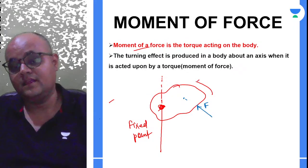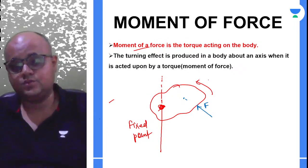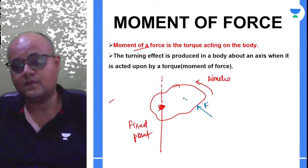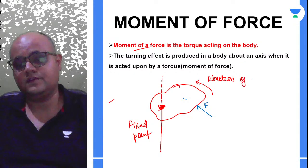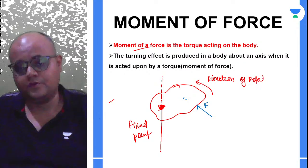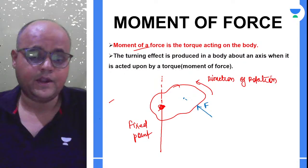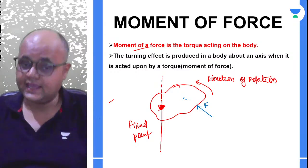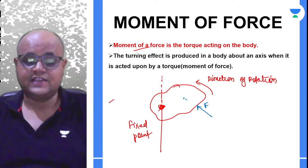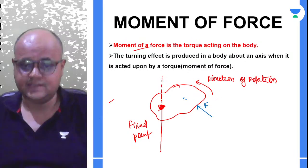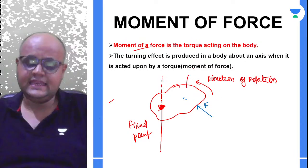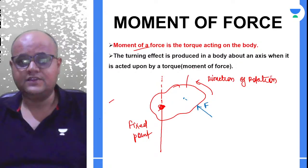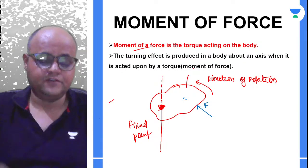Whenever we apply force on a fixed body, the body starts rotating about a fixed point. This can be demonstrated using any lamina — this lamina can be of any shape. So moment of force is the turning effect produced when a force is applied to a body fixed at one end, and we will now understand how to measure it.